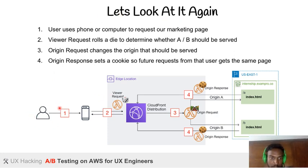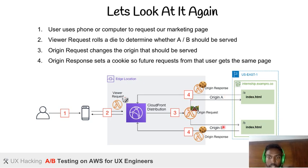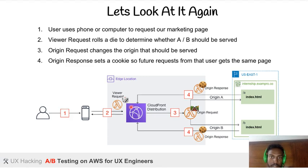Let's look at this from the user's perspective. The user accesses a marketing web page from their phone or computer. The viewer request handles the logic to determine whether A or B should be served. It then passes to the origin request, which changes the origin to A or B. Once the user receives, say, prototype A, the origin response sets a cookie recording that this user accessed A — so future visits from the same user will only show A.